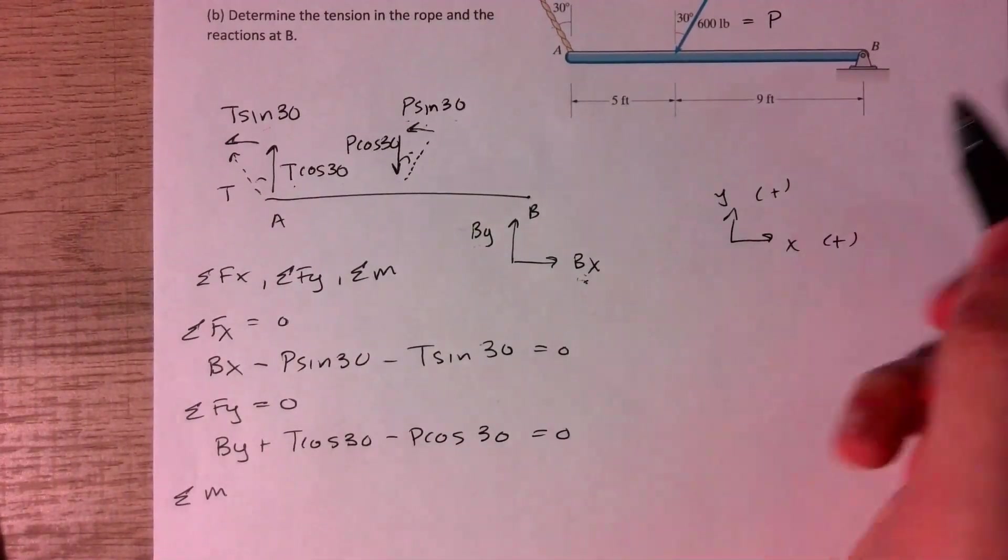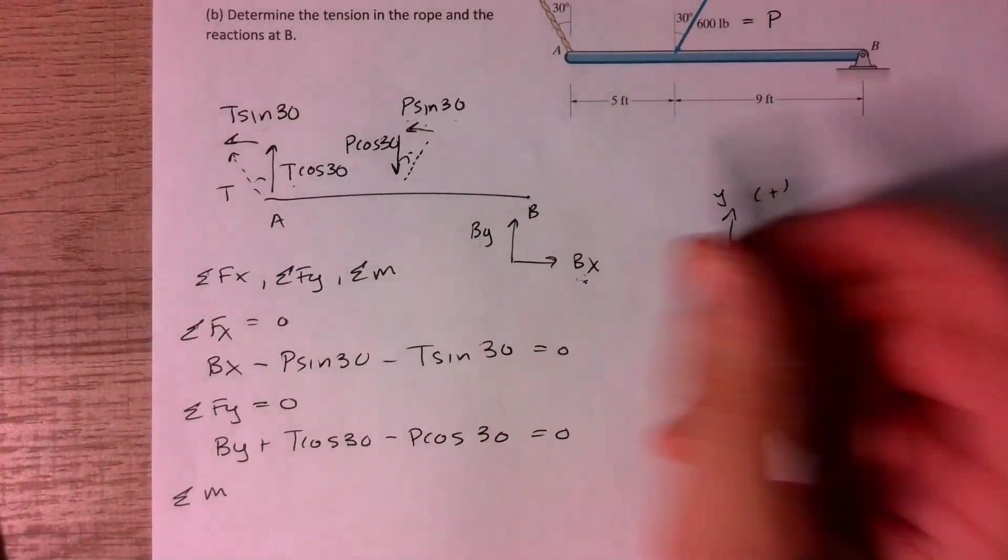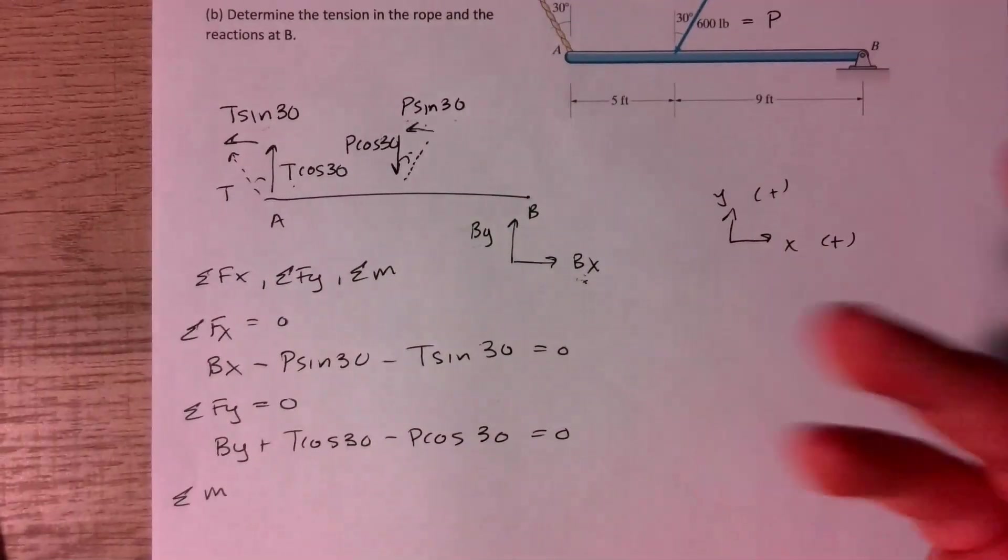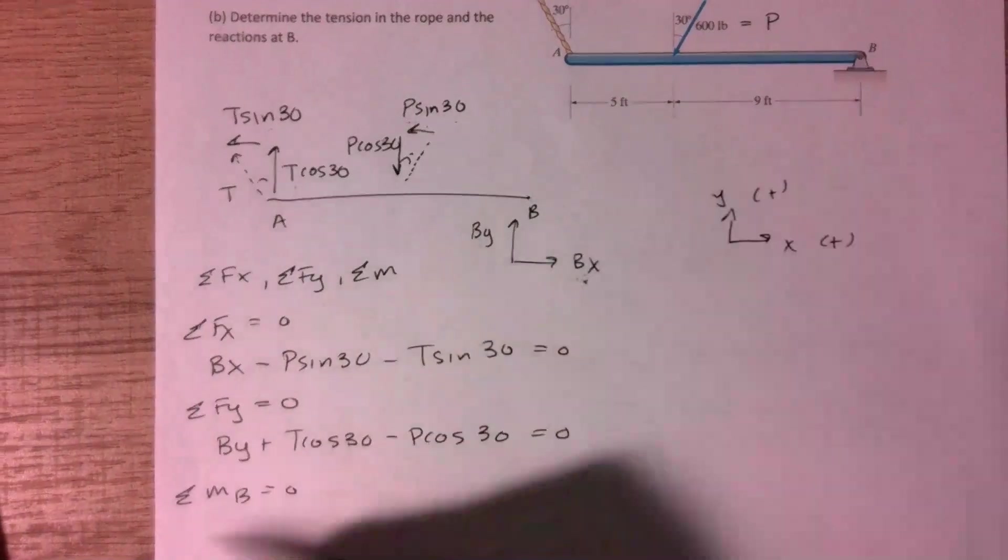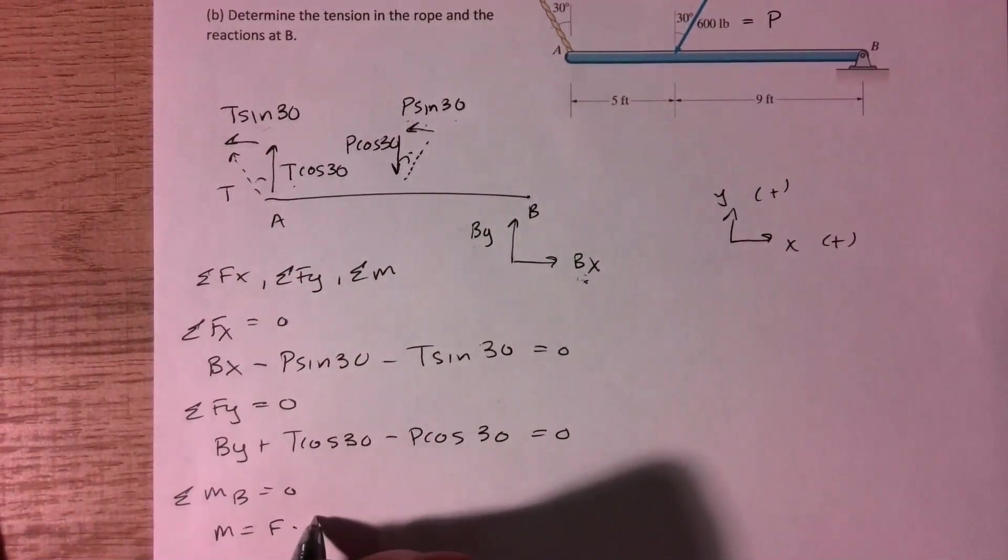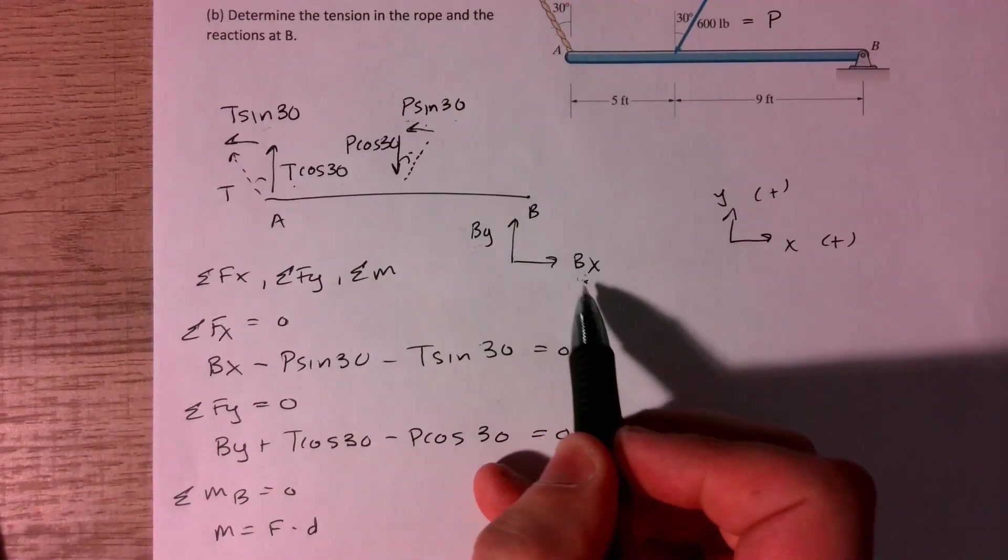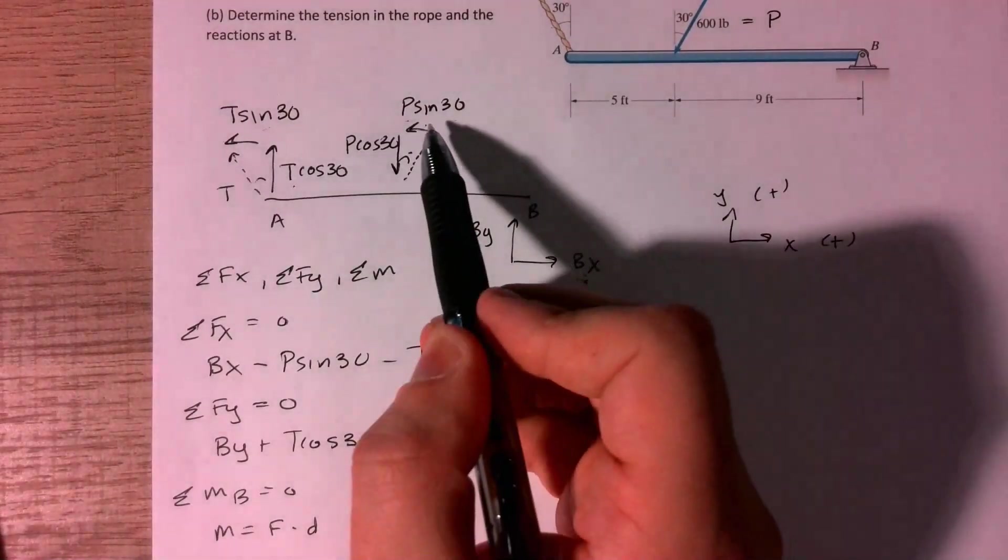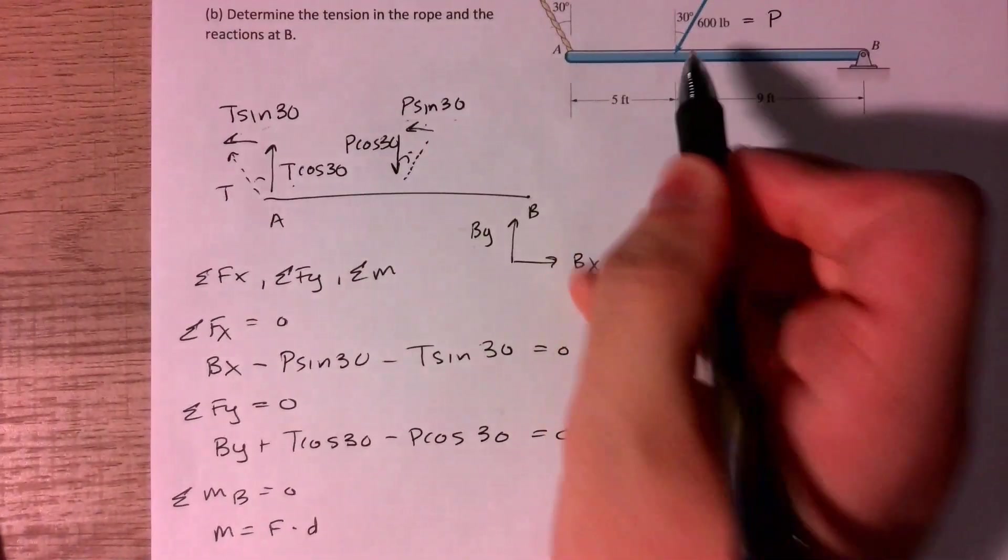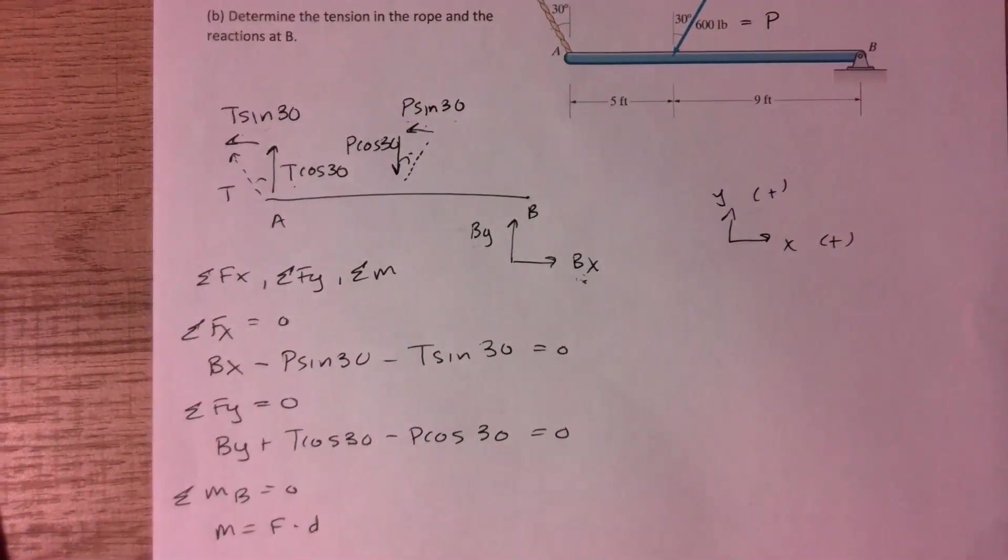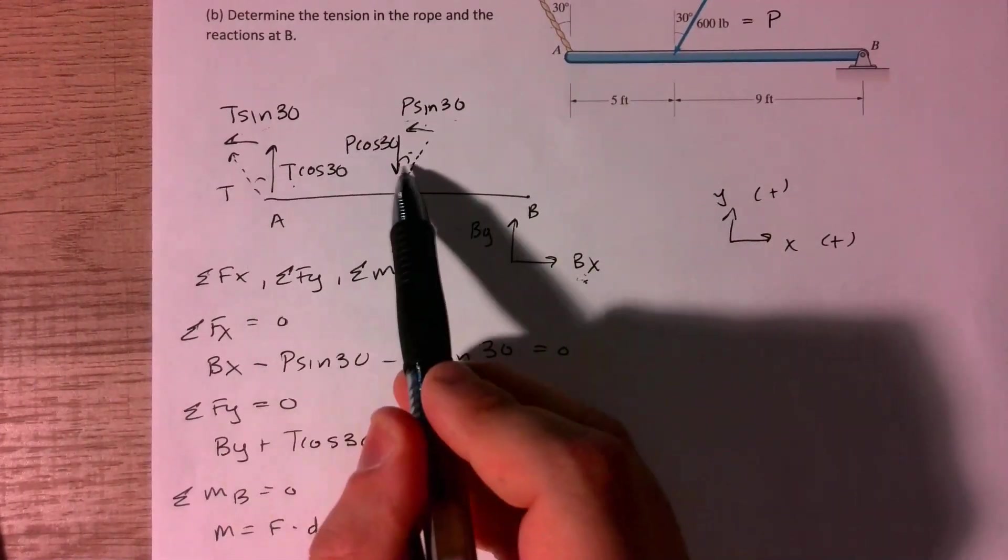And then lastly, we'll want to take our moments. So I'll choose to take our moments about point B. You can take it about anywhere, but you want to be smart with it for convenience sake. So I'll just choose point B. And so the moment is defined as force times distance. So because the distance is zero at point B, none of the reaction forces contribute to the moment. And then P sin 30 and T sin 30 are actually acting along the axis of the beam. So those don't contribute to our moment at all either. So all we're left with is the vertical components of the tension and the applied load.